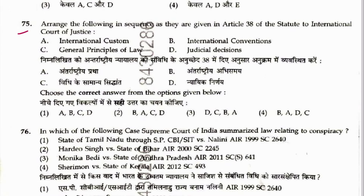Question 75: Arrange the following in sequence as given in Article 38 of the Statute of the International Court of Justice. The order is: international conventions, customs, general principles of law, and judicial decisions — giving sequence BACD. Answer is 2.